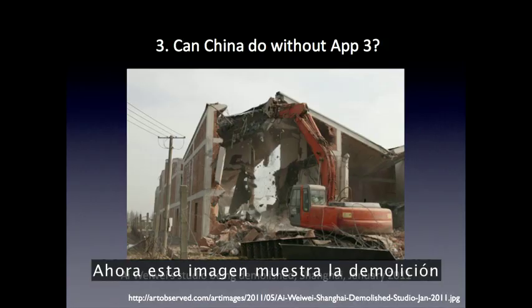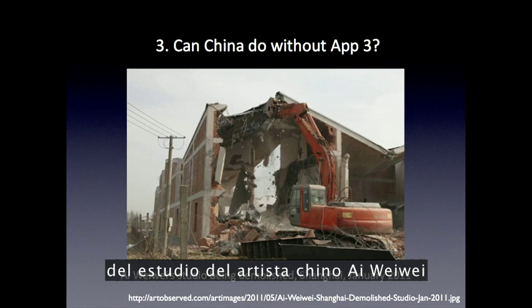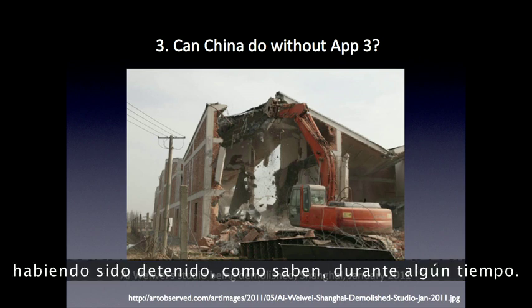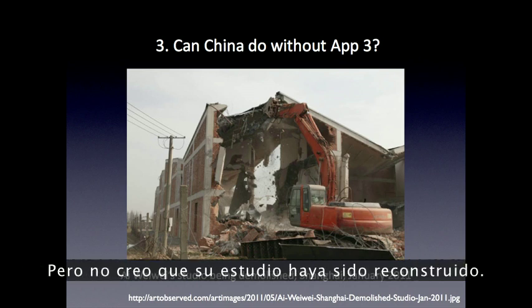This picture shows the demolition of the Chinese artist Ai Weiwei's studio in Shanghai earlier this year. He's now free again, having been detained for some time. But I don't think his studio has been rebuilt.